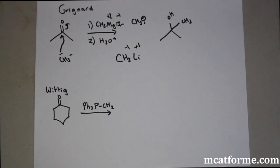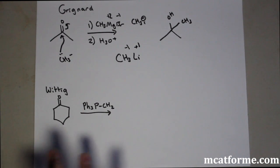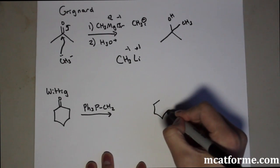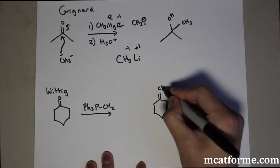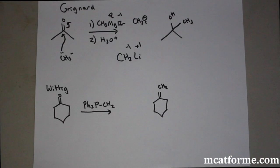Next one is Wittig reaction. We react some type of ketone with Ph3PCH2. Ph is phenol - those benzene rings attached to it. What's going to happen is this ketone will now just turn into an alkene. It converts ketones to alkenes.